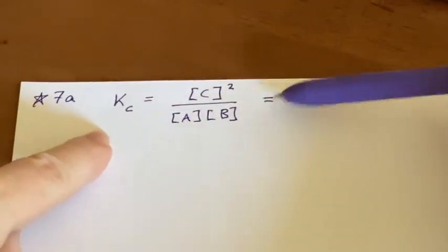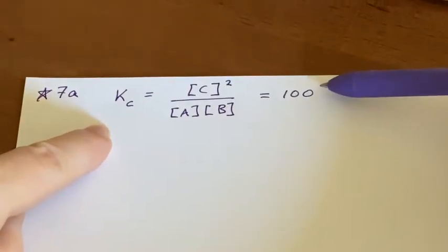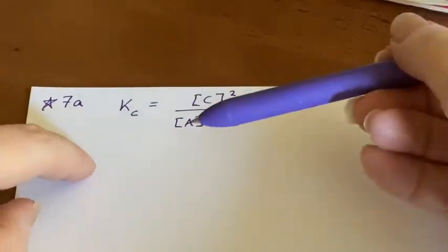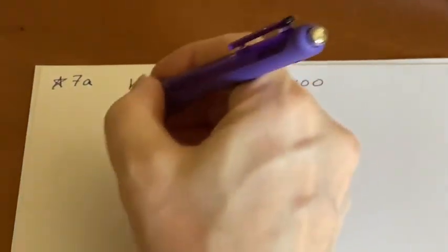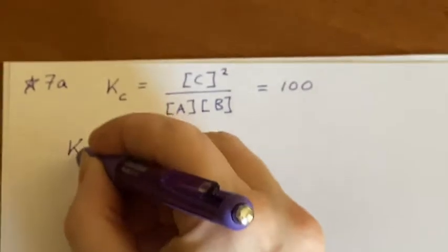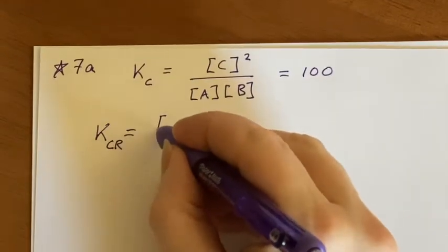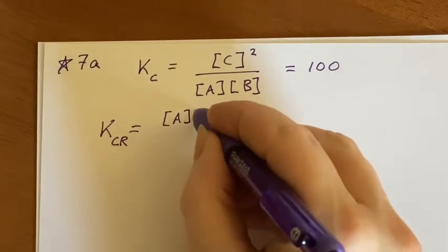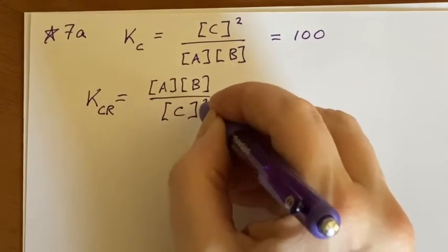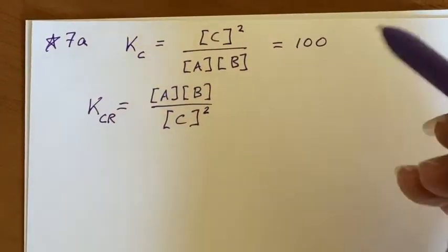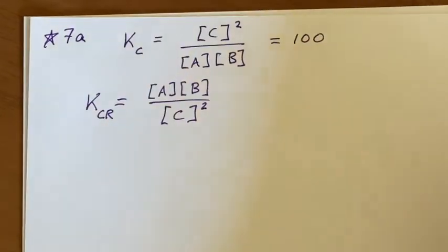We remember what K sub C is for the one they're talking about, and that is set to 100. If we talk about the reverse one, then we would be coming up with a different K sub C. I'll call it C-R just for fun, and that would mean that the products were A and B, and the reactant was C, and it has to be squared. Well, this is just this upside down, right?